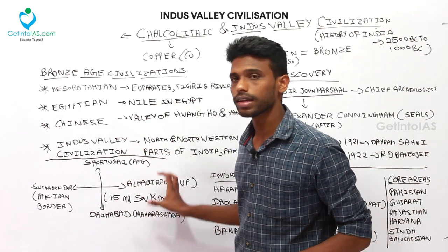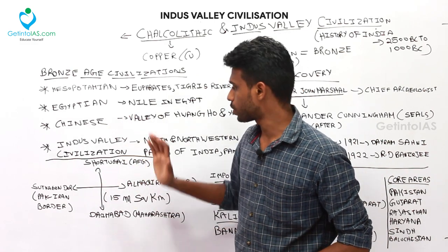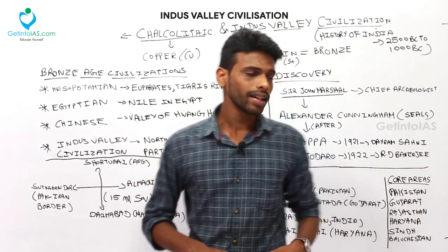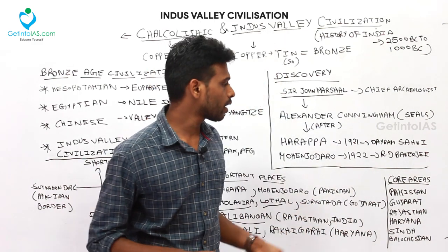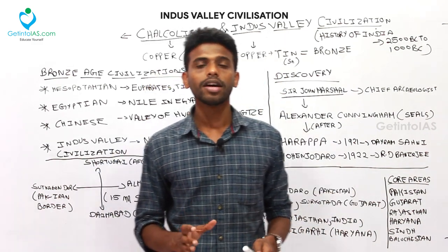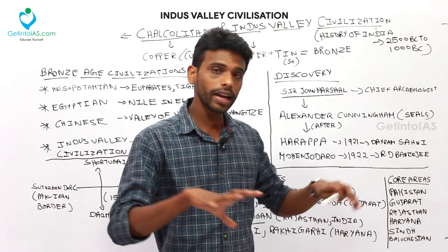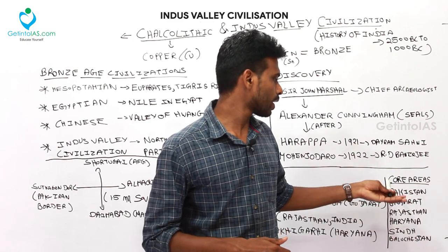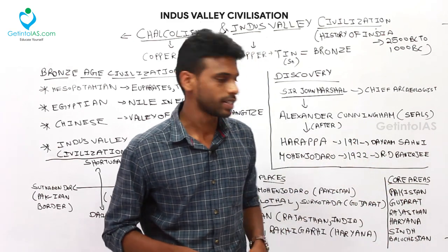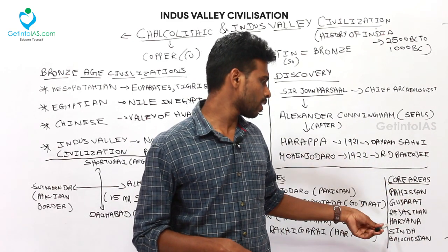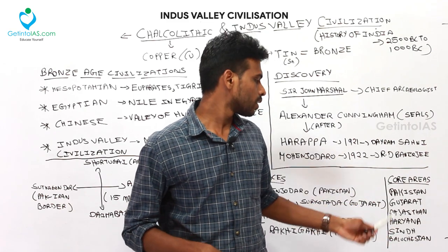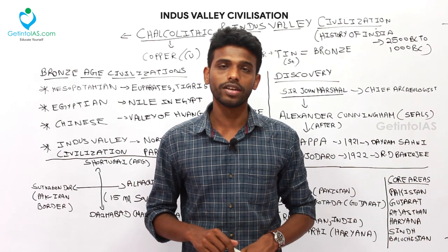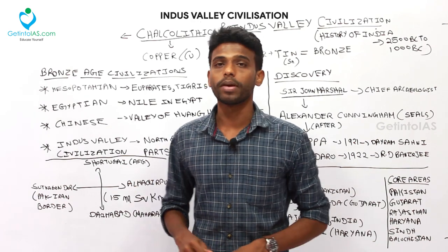The Harappan civilization covered an area of approximately 1.5 million square kilometers. It is also called the Harappan Civilization because Harappa was the first site discovered. Core areas include Gujarat, Rajasthan, Haryana, Sindh, and Balochistan. Only some sites are now within India after partition; the remaining sites are in Pakistan.